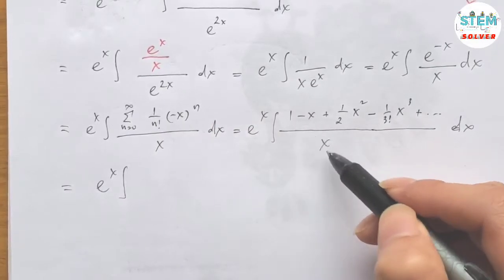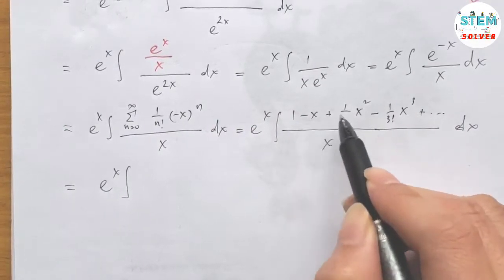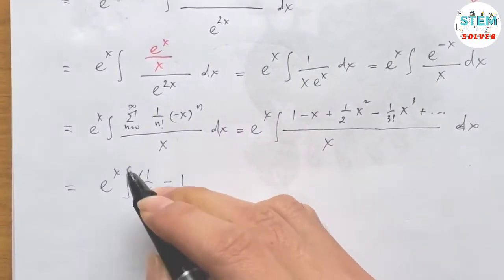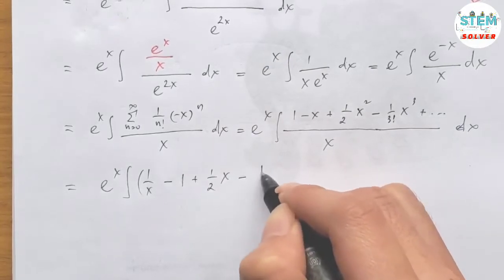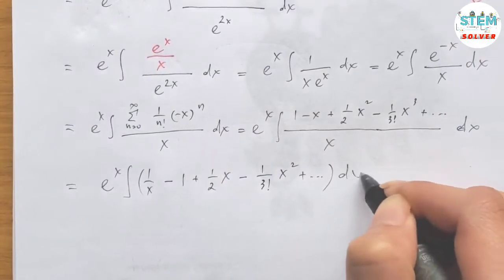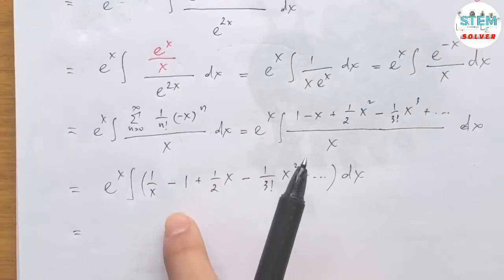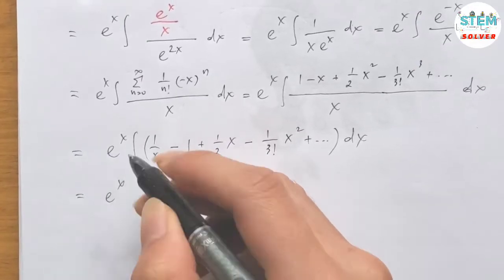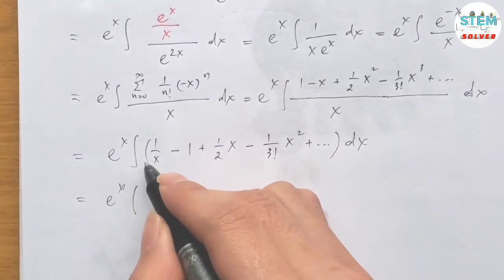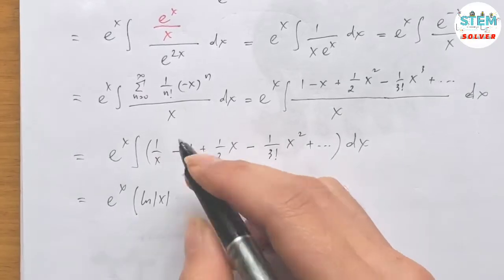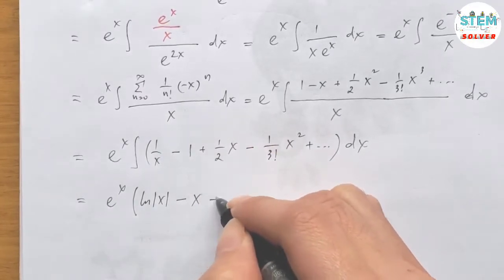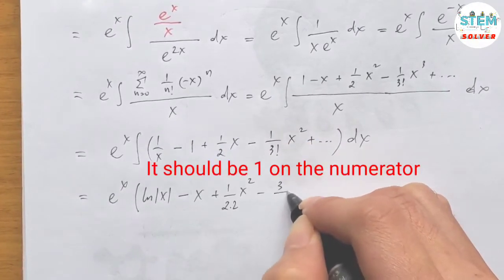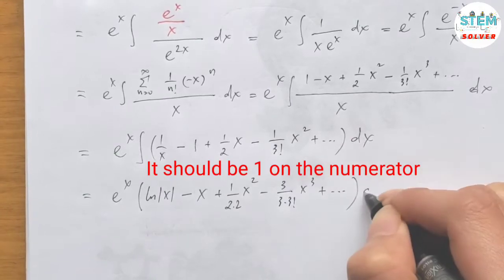Dividing each term by x, we get 1 over x minus 1 plus 1 over 2 · x minus 1 over 3 factorial · x squared plus dot dot dot, dx. Now we can easily integrate this term by term as it is a simple polynomial series. Integrating gives: natural log of absolute value of x, minus x, plus 1 over (2 times 2) · x squared, minus 1 over (3 times 3 factorial) · x cubed, plus dot dot dot.